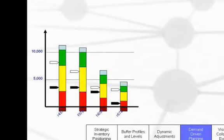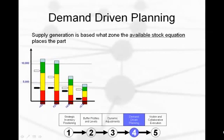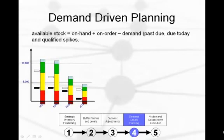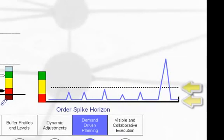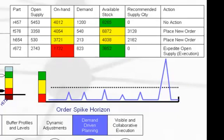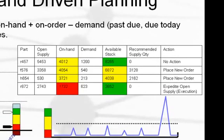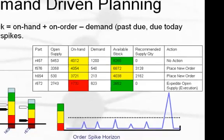The next aspect of DDMRP is the actual planning logic and mechanisms. Let's bring in four parts and their respective buffer levels. For each part, we have provided two points of data: the open arrow represents the available stock position, and the closed arrow represents the current on-hand position. Supply generation is based on something called the available stock equation: on-hand plus on-order or open supply, minus any unfulfilled demand due today or in the past, plus any qualified future spikes. Each item has an order spike horizon — typically one ASR lead time — and an order spike threshold. Sales orders that trip the threshold within the horizon are added to the available stock equation. On a sample planning screen, two parts require no additional supply as their available stock equations are in the green zone, while the other two require additional supply as they are in the yellow zone.